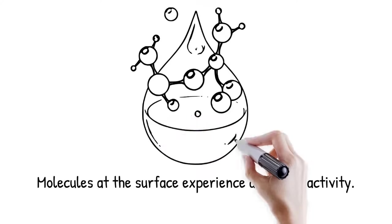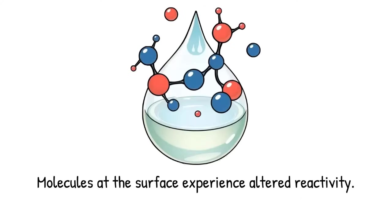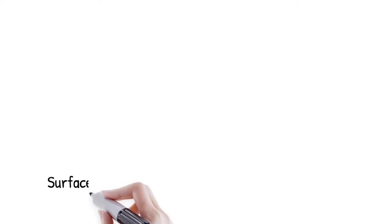Surface fields at water droplet interfaces are thought to drive peroxide and radical formation. It is like standing on a windy mountaintop—forces are magnified at the edges compared to the valley below.